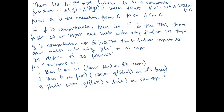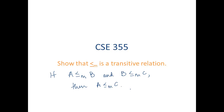So H is a computable function that computes H of W, which is the same as G of F of W. We have confirmed that little h is computable — it is computed by big H. By the definition, A is mapping reducible to C. We have shown: if A is mapping reducible to B and B is mapping reducible to C, then A is mapping reducible to C.